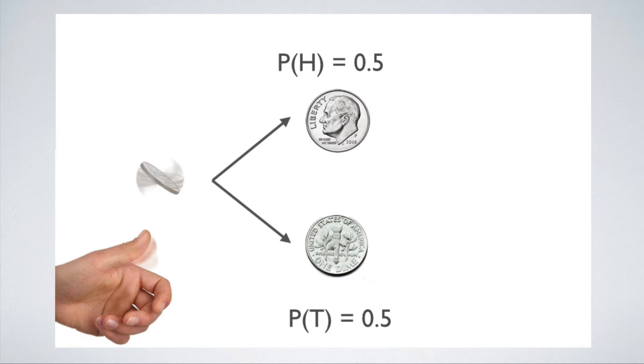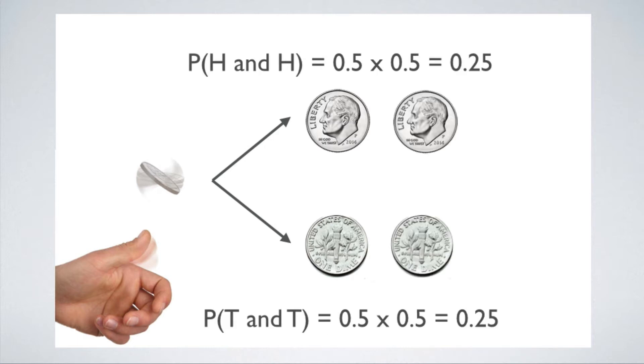So let's imagine tossing two heads in a row, or two tails in a row. To get this, we just multiply the probabilities of each of the events separately, and we get one half times a half, which is equal to one quarter.